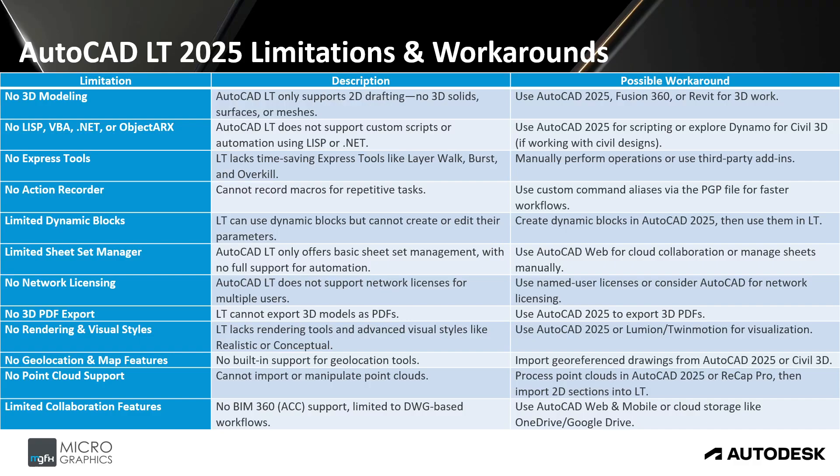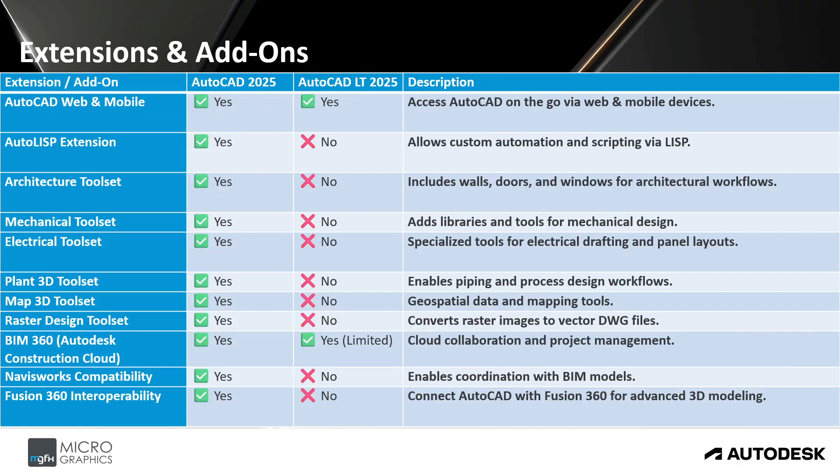AutoCAD LT 2025 limitations include: no 3D modeling, no LISP, VBA, .NET, or ObjectARX files, no express tools, no action recorder, limited dynamic blocks, limited sheet set manager, no network licensing, no 3D PDF exports, no rendering and visual styles, no geolocation and map features, no point cloud support, and limited collaboration features.